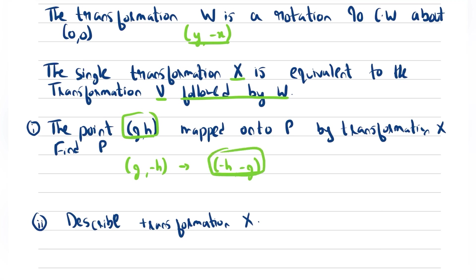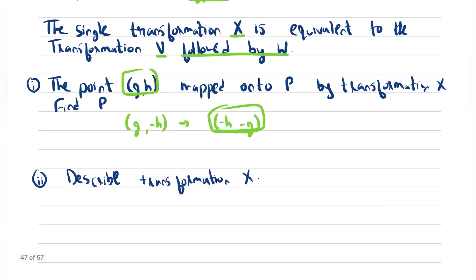So the answer is -h,-g, meaning x,y becomes -y,-x. This corresponds to a reflection along the line y = -x. If you don't know the concepts of reflection and rotation, you'll get stuck in this question.